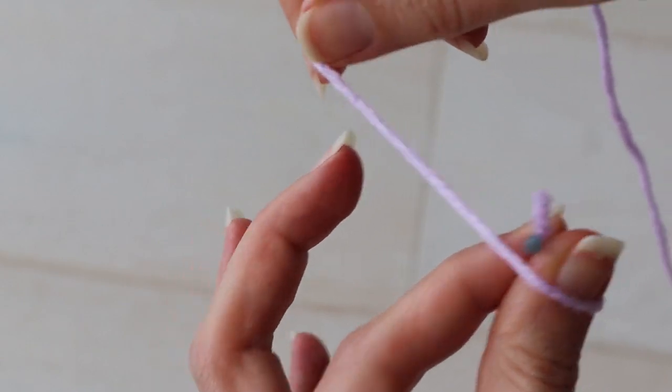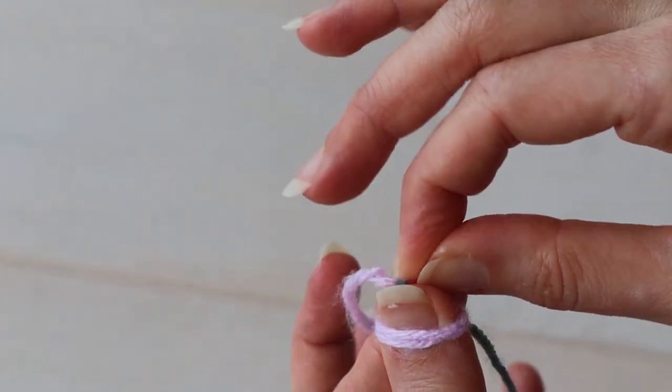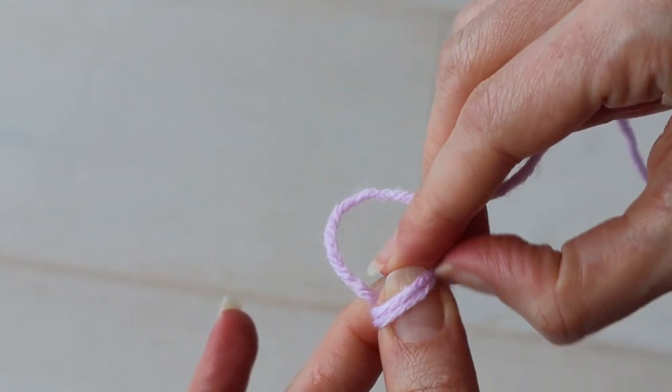So wrap the yarn once, wrap again so that the second wrap is on top of the first one, and pull.